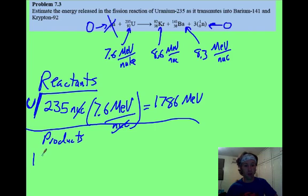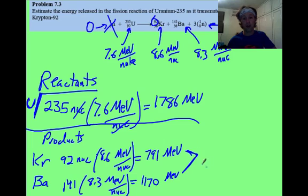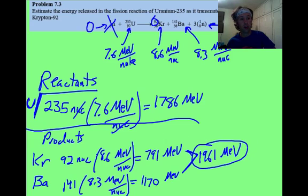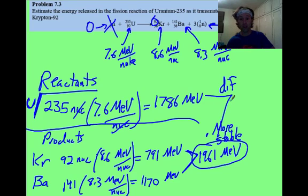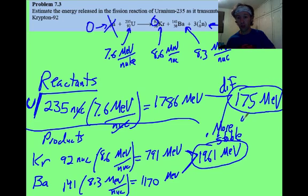For products, you've got your krypton and your barium. Krypton, you've got 92 nucleons from this number here, times 8.6. You combine your product side and get 1961. Now you look at this and say, which is bigger, my reactants or my products? Well, it is your products. That means your products are more stable. They have a higher binding energy. So you take the difference between them, which is like your mass defect or the amount of energy released. You're going to get a difference of about 175 MeV, which is my answer.